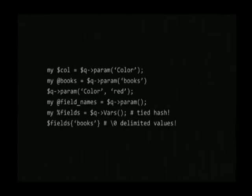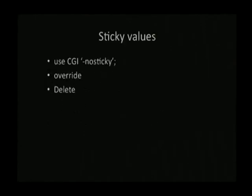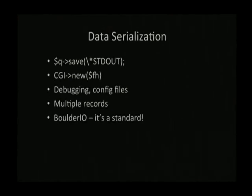I should have included a form in here. Templating languages? Parameters — everything handled. Sticky values, right? So if you set a parameter and then print out the form with the same name using the same CGI object, you're going to find the value stick around. So you get persistence. That's why you need override and delete and die, die, die. Go away, param. And it has its own data serialization format — you can just save your arguments to standard output or any other file handle. And you can reinitialize a new object from that file handle. This can be used for debugging, config files, multiple records. Yes, you can have multiple CGI requests serialized together.